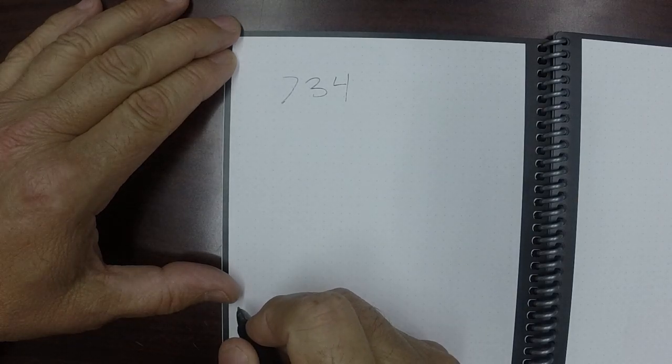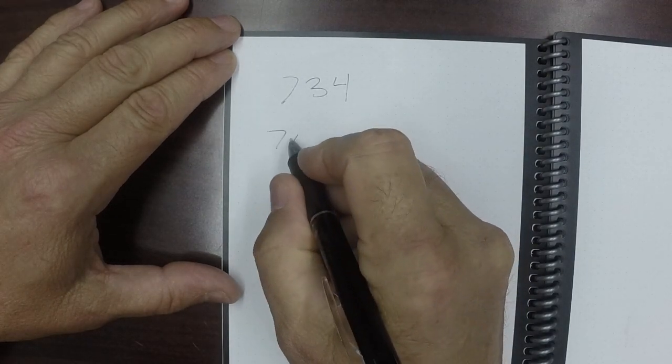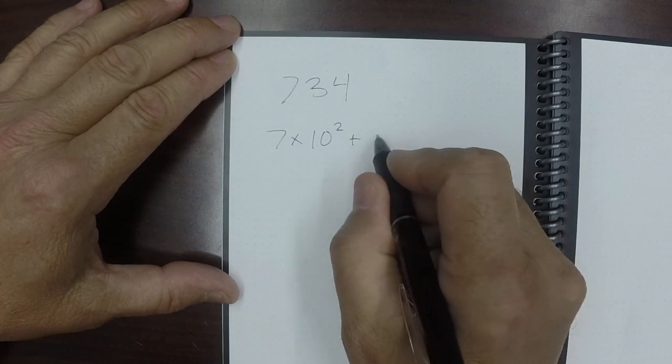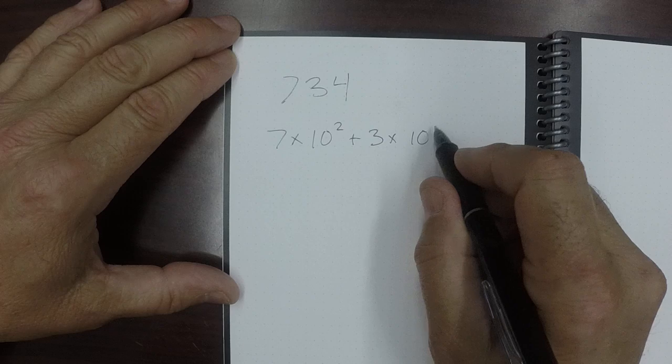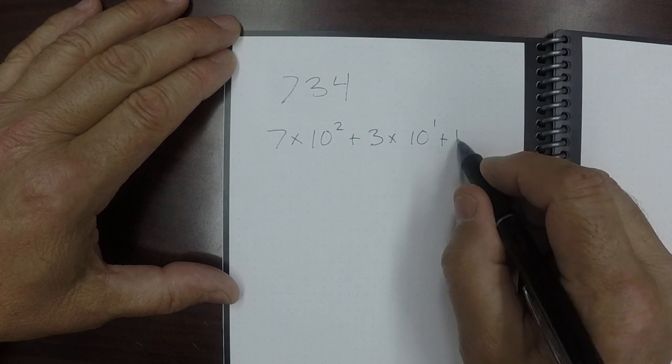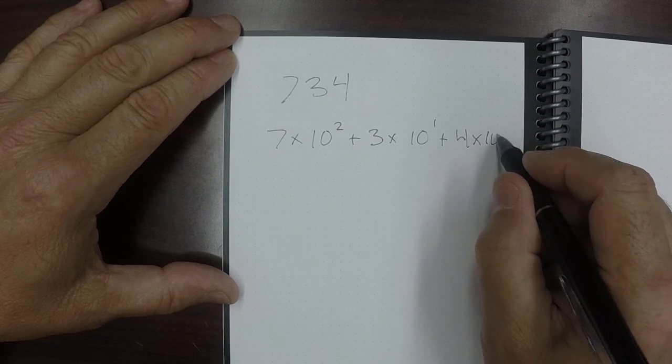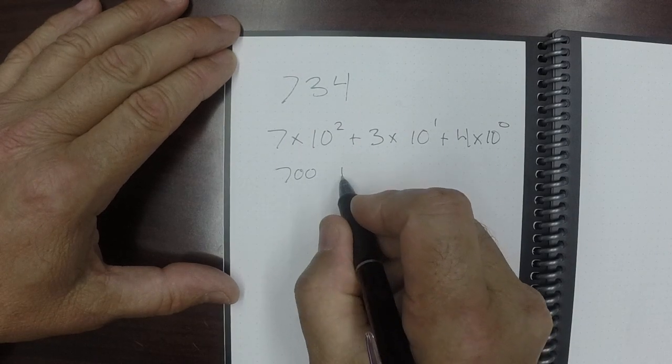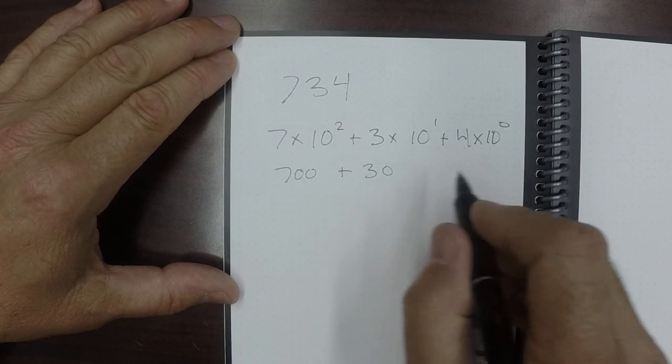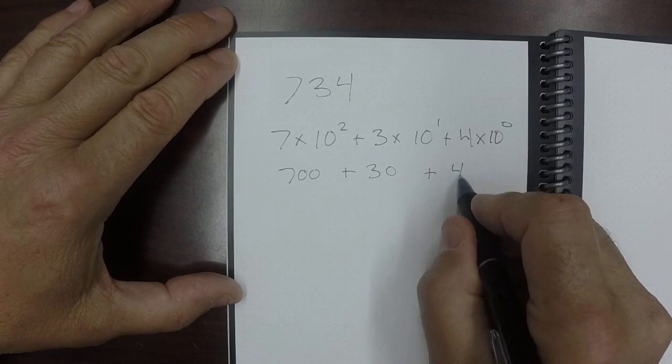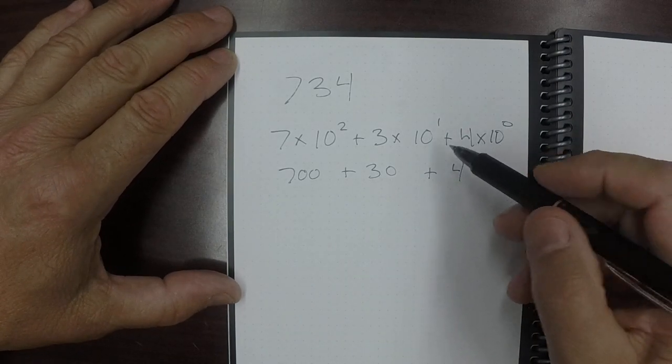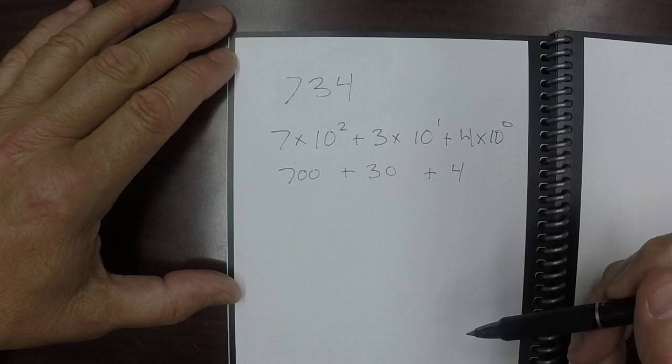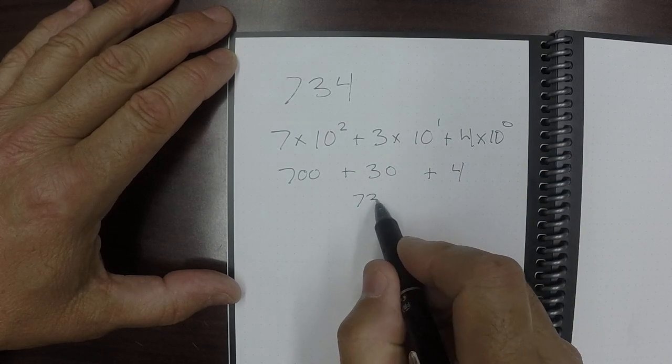Well, that really is 7 times 10 to the second plus 3 times 10 to the first plus 4 times 10 to the zero, which is 700 plus 30 plus 4. 10 to the zero is 1, 10 to the 1 is 10, 10 to the 2 is 100, and that makes 734.